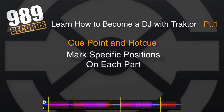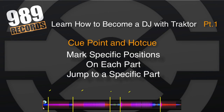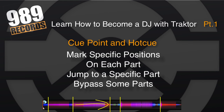With cue points you can easily jump to a specific part of the song whenever you want, and create a live edit of the mix. Furthermore, you can even use cue points to bypass some parts of the song, creating some kind of radio edit from an extended mix.